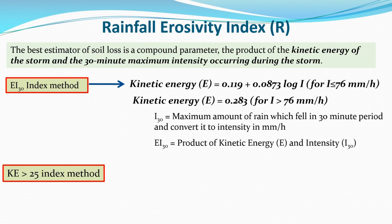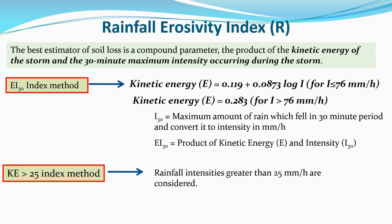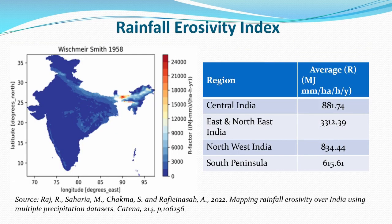The KE > 25 index method can also be used to compute the Rainfall Erosivity Index. The difference here is that we only consider intensities greater than 25 mm/hr; intensities below this threshold are not considered. There is a dedicated chapter on rainfall erosivity index and soil erodibility where we will learn more detail and solve problems related to these indexes.